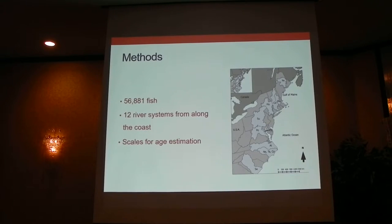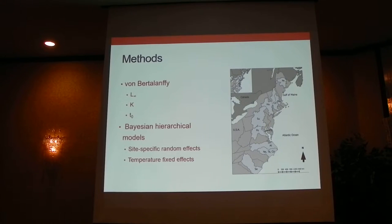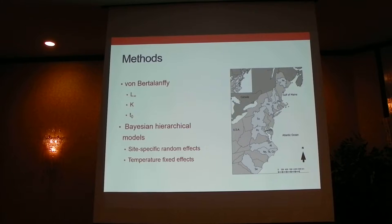For our methods, we used approximately 56,881 fish from 12 systems along the coast, ranging from the Merrimack River down to the Santee River. For all results, we used scales as age estimation. We used the Von Bertalanffy growth model to represent the growth of shad — a relatively common growth curve. The three parameters are L-infinity, K, and T-sub-zero. L-infinity represents the mean maximum asymptotic length, K represents the speed at which fish can reach L-infinity, and T-sub-zero is the age of a fish when length is zero.